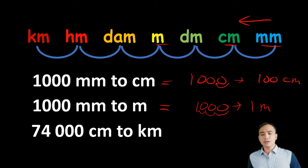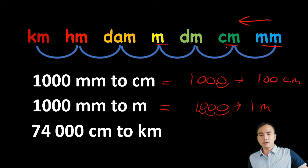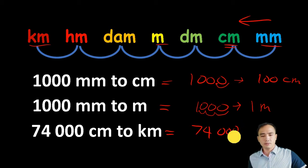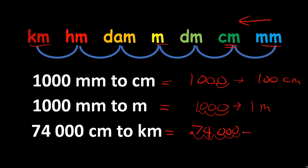Next: 74,000 centimeters to kilometers. From centimeter going to kilometer is five steps going to the left. Therefore, we move the decimal point five places to the left. The final answer is 0.74 kilometers.